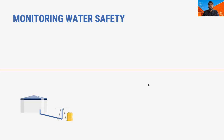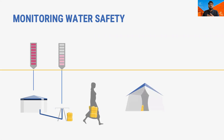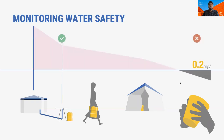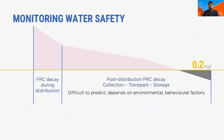In humanitarian settings, it's usual practice to monitor FRC levels after 30 minutes of contact time and to follow up with monitoring at the tap stand. But what happens after water is collected, transported home, and then stored before consuming? Even if water is considered safe at the collection point, we don't know whether the residual protection is sufficient to prevent recontamination before drinking. In fact, we know that chlorine decay after distribution can be significant and rapid. Unlike the initial chlorine demand of the raw water or the decay that occurs during distribution in the pipe network, the rate of post-distribution decay is challenging to model as it depends on factors related to the environment, raw water quality, and users' behaviors that are all site-specific and not well understood.